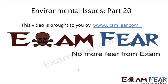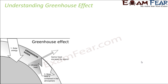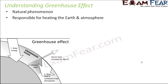This video on environmental issues part 20 is brought to you by examfear.com. Let us try to understand greenhouse effect. Greenhouse effect is a natural phenomenon — it cannot be created artificially, it happens on its own. This phenomenon is responsible for heating the earth as well as the atmosphere, because solar radiation gets trapped within the earth.